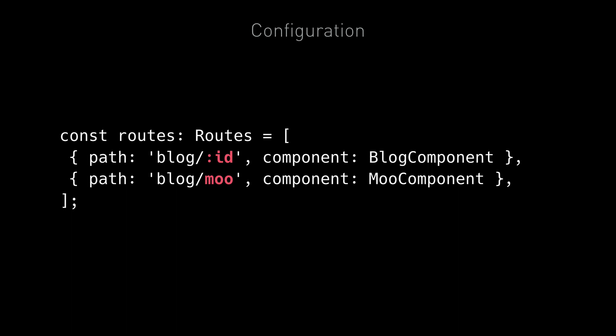But how do we actually pass into the blog component the value of the ID variable? For example, if we visited slash blog slash one, how does blog component know that the ID is one and therefore show the appropriate article? To do that, we use something called an activated route.